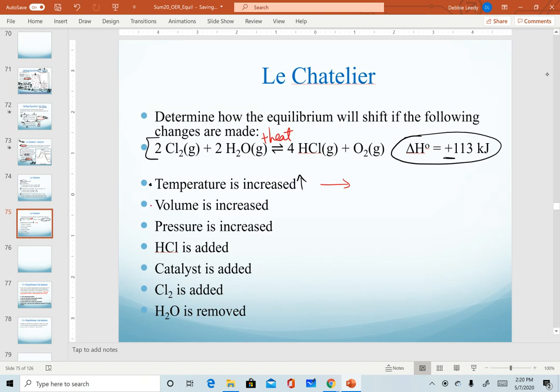For volume increasing, I want to look at how many moles of gas I have on each side. On our reactant side, we have a total of four, and on our product side, we have a total of five. When I increase volume, it will shift to the side with more moles of gas, to the right. When pressure is increased, this is the same as decreasing volume, so it would be to the opposite side, to the left.